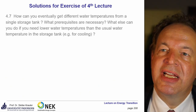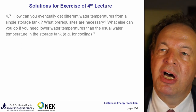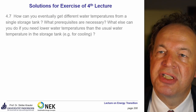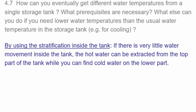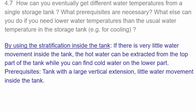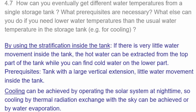Question 4.7: how can you get different water temperatures from a single storage tank, and what if you need a lower temperature than the tank provides? You can use thermal stratification inside the tank — the hottest water sits at the top and cooler water at the bottom, provided there is a large vertical tank extension and little water movement. Cooling can be achieved by operating the solar system at night, using thermal radiation exchange with the sky or water evaporation.